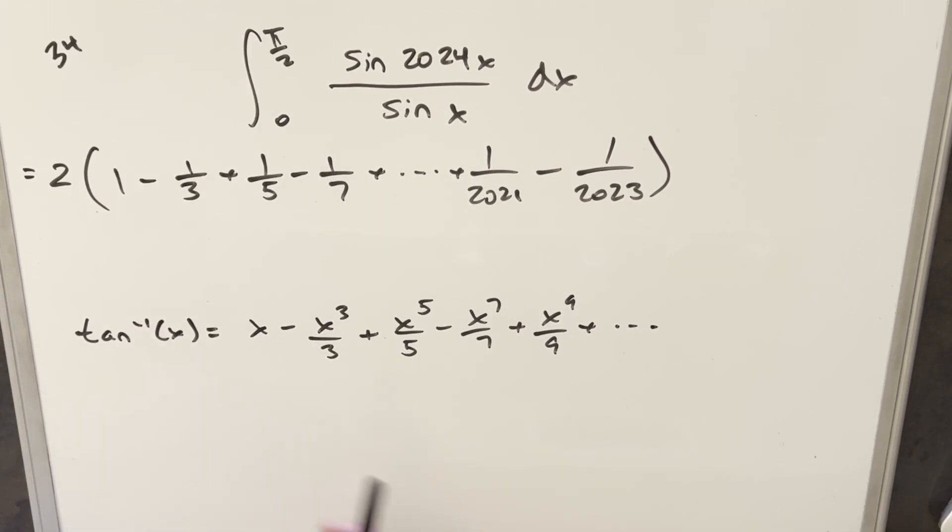Let me just clean up the board and we'll just try to approximate this. Okay, so what we have here for the approximation is going to be the power series for arctan. And of course, for power series, this goes to infinity. What we have does not go to infinity.